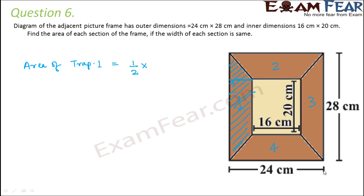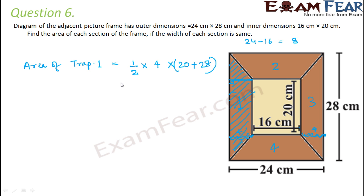To find the width of the frame: the outer length is 24 cm and the inner length is 16 cm. Subtracting gives 24 − 16 = 8 cm, which equals the width on both sides combined. Since both widths are equal, each width is 4 cm. The area of trapezium 1 = ½ × height × (sum of parallel sides) = ½ × 4 × (20 + 28) = ½ × 4 × 48 = 96 cm².